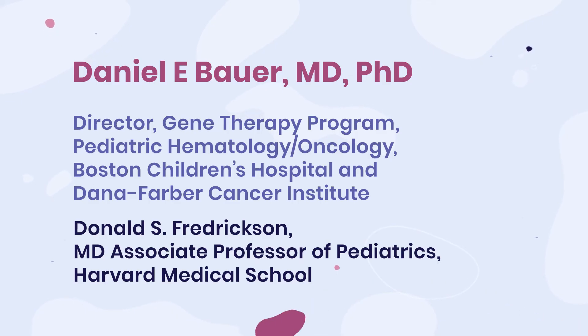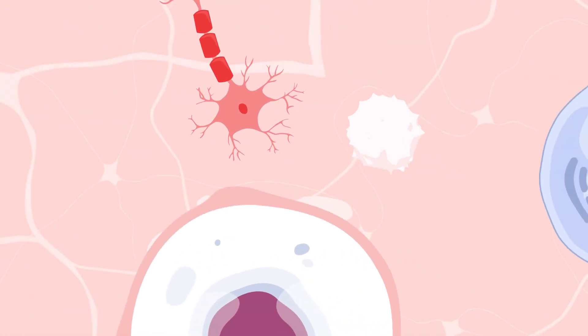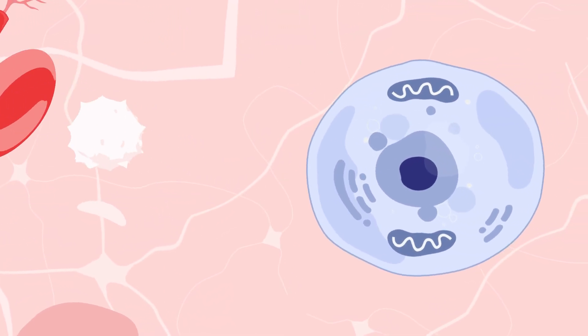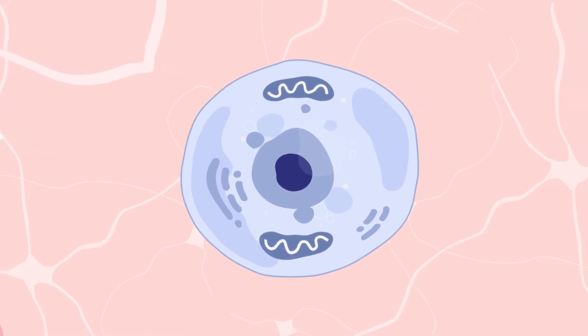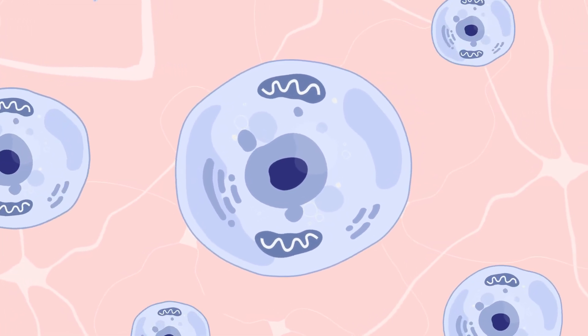Cell therapies could be based on blood stem cells or immune cells for disorders like sickle cell anemia or certain forms of cancer. Many cell types have the potential to be modified. Depending on the type of cell therapy, the cells used may be from the person's own body or from a donor.